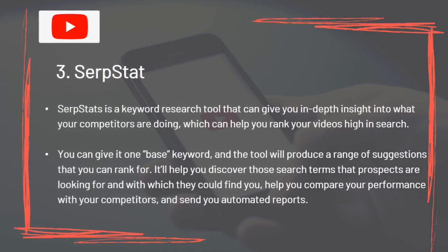Tool 3: SERP STAT. SERP STAT is a keyword research tool that gives you in-depth insight into what your competitors are doing, which can help you rank your videos high in search. Give it one base keyword and the tool produces a range of suggestions to rank for. It helps you discover search terms prospects are using to find you, compare your performance with competitors, and send automated reports.